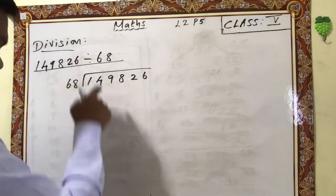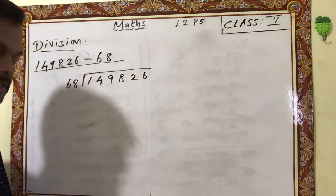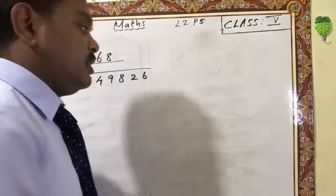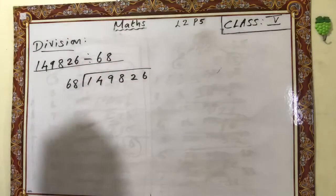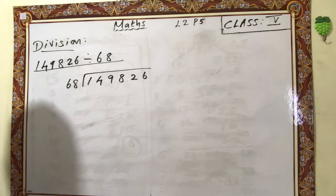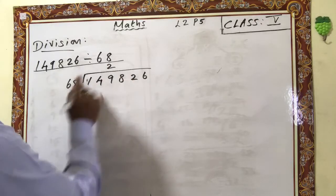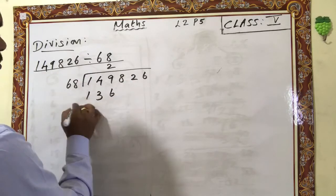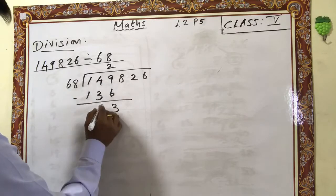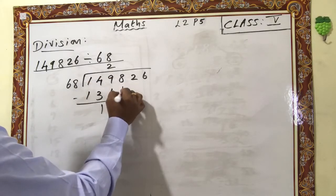Write the table of 68. As I already explained, follow that method. Table of 68: 1 × 68 is 68, 2 × 68 is 136. So 1 × 68 is 136 — wait, 2 × 68 is 136. Subtract: 6 minus 9, borrow — 3; 4 minus 3 is 1. Then bring down the next number.